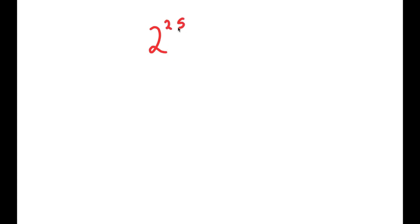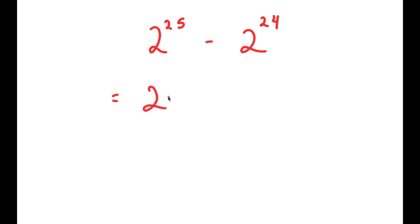In this video, I'm going to solve the problem 2 to the power of 25 minus 2 to the power of 24. To solve this, I'm going to first start by rewriting 2 to the power of 25 as 2 to the power of 24 plus 1, so I have 2 to the power of 24 plus 1, minus 2 to the power of 24.